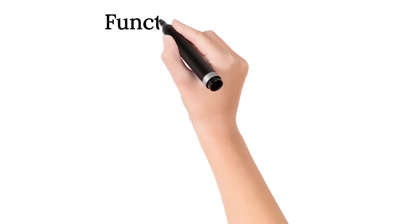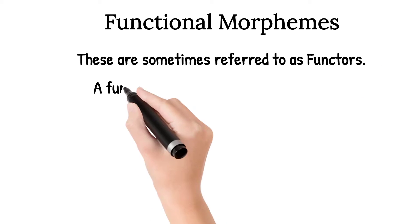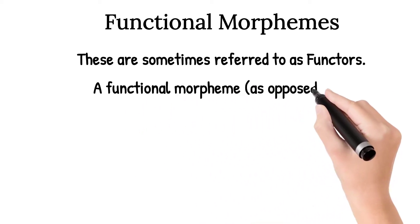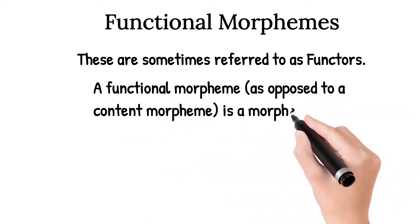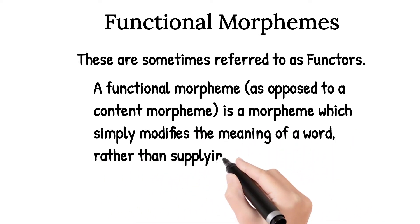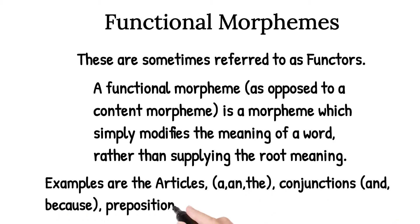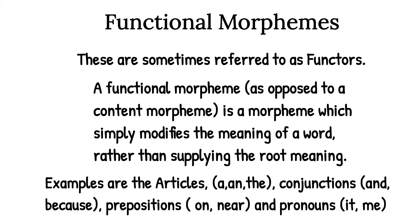Now moving towards functional morphemes — these are sometimes referred to as functors. A functional morpheme, as opposed to a content morpheme, is a morpheme which simply modifies the meaning of a word rather than supplying the root meaning. Examples are the articles like 'a' and 'the', conjunctions like 'and' and 'because', prepositions like 'on' and 'near', and pronouns like 'it' and 'me'. These are functional morphemes, and we call them functors.